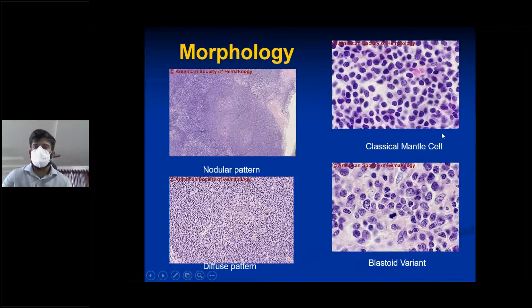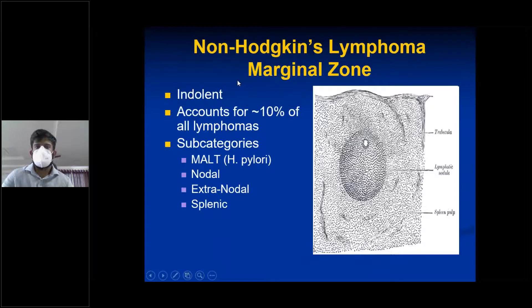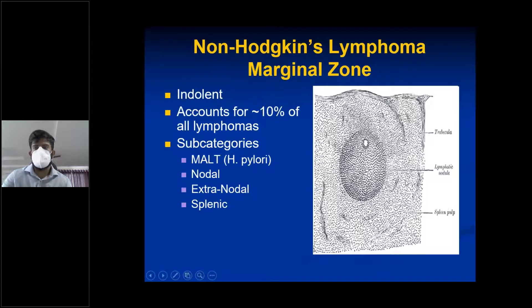Mantle cell lymphoma morphology shows a nodular pattern, diffuse pattern, classic mantle cell pattern, and a blastoid variant. The classic mantle cell pattern is more common. Marginal zone lymphoma is indolent, accounting for about 10% of all lymphomas. Subcategories include MALT (H. pylori-induced), nodal, extranodal, and splenic. The lymphoma is seen in the marginal zone — hence the name.